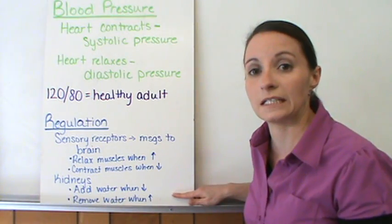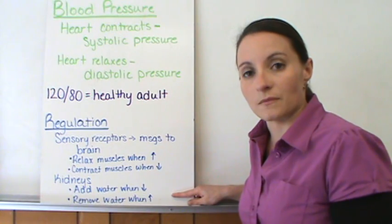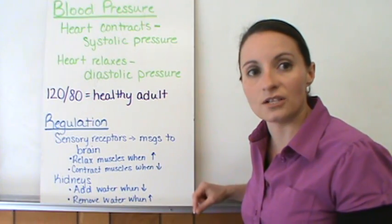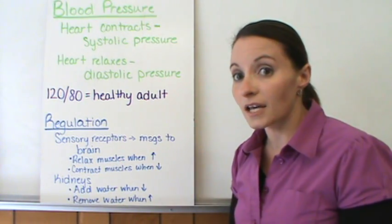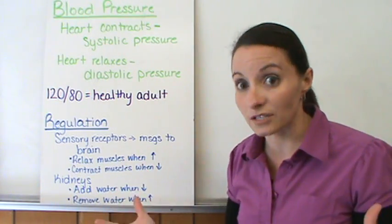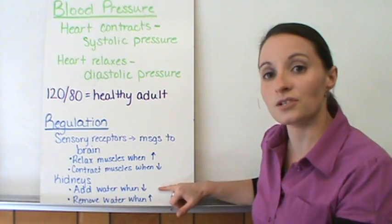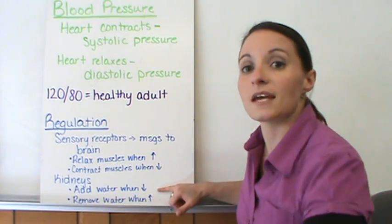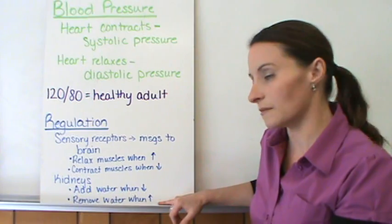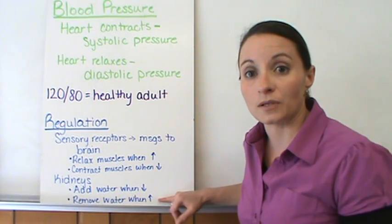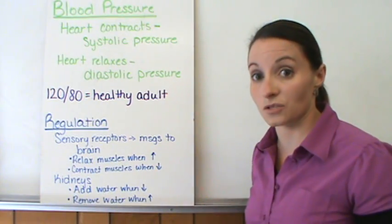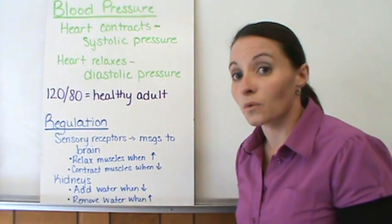Another regulator is your kidneys. If you add more volume, you get more pressure — like filling a water balloon, the more water you add, the more pressure builds. So if blood pressure is too low, the kidneys add water to the system. If blood pressure is too high, the kidneys remove water from the system to help regulate it. So both sensory receptors signaling the brain and the kidneys help regulate blood pressure.